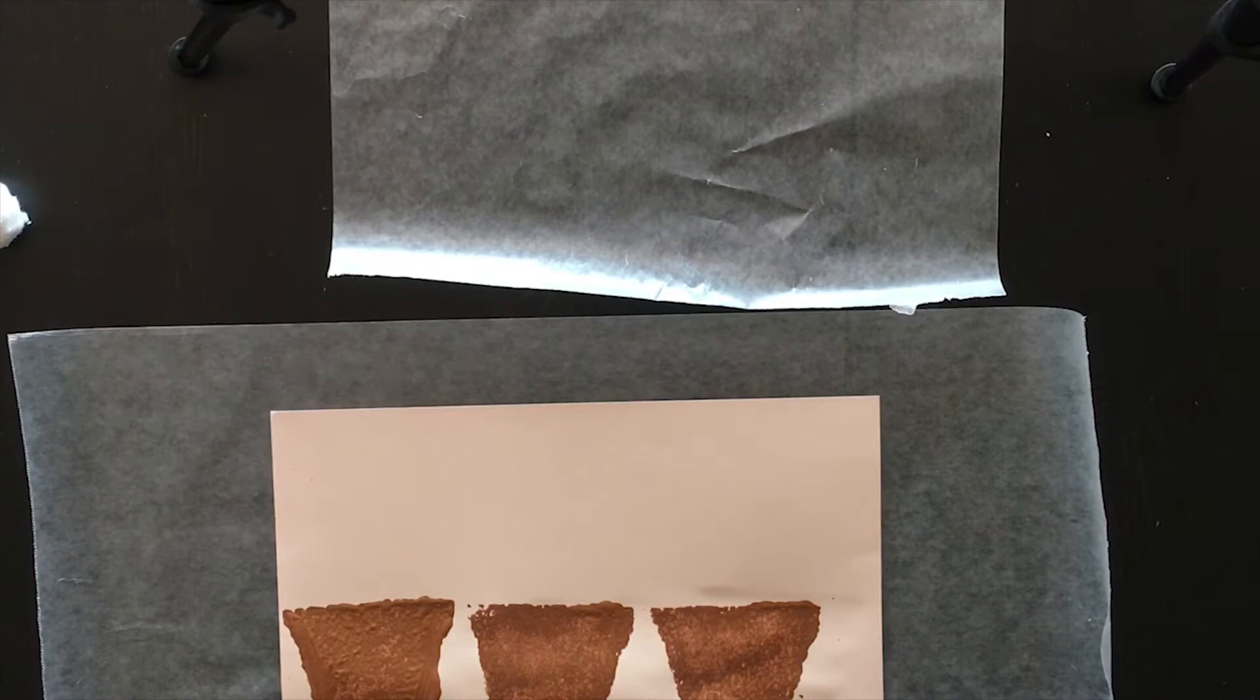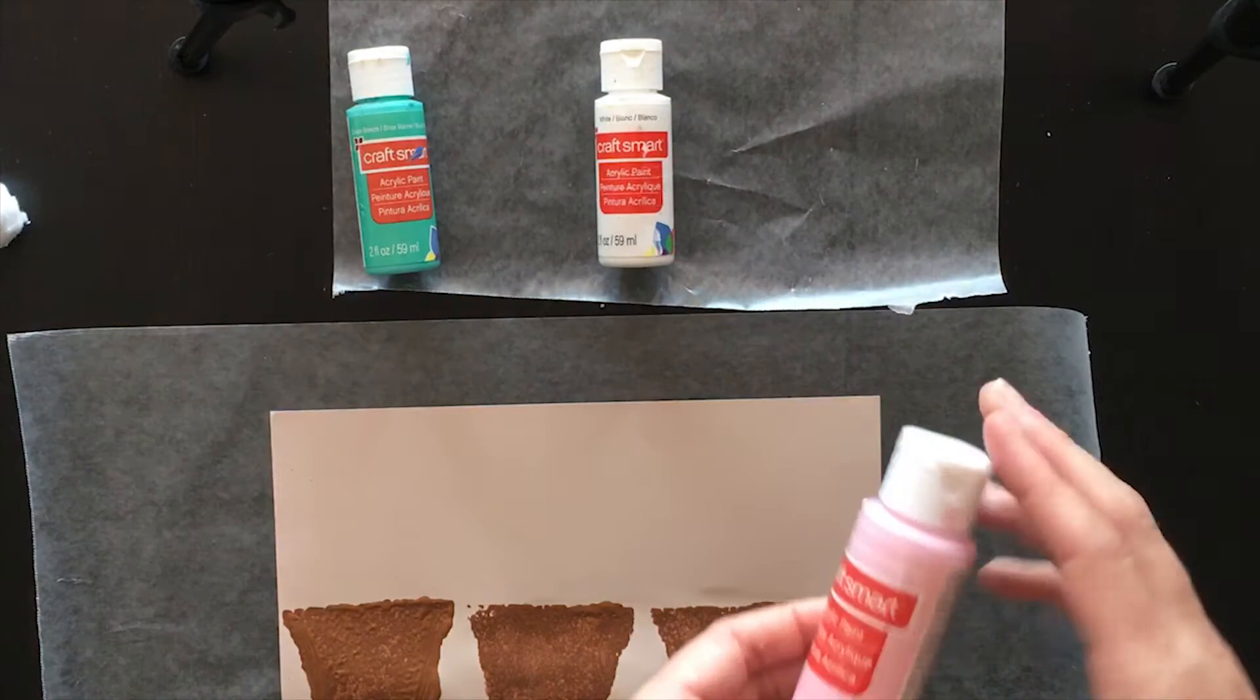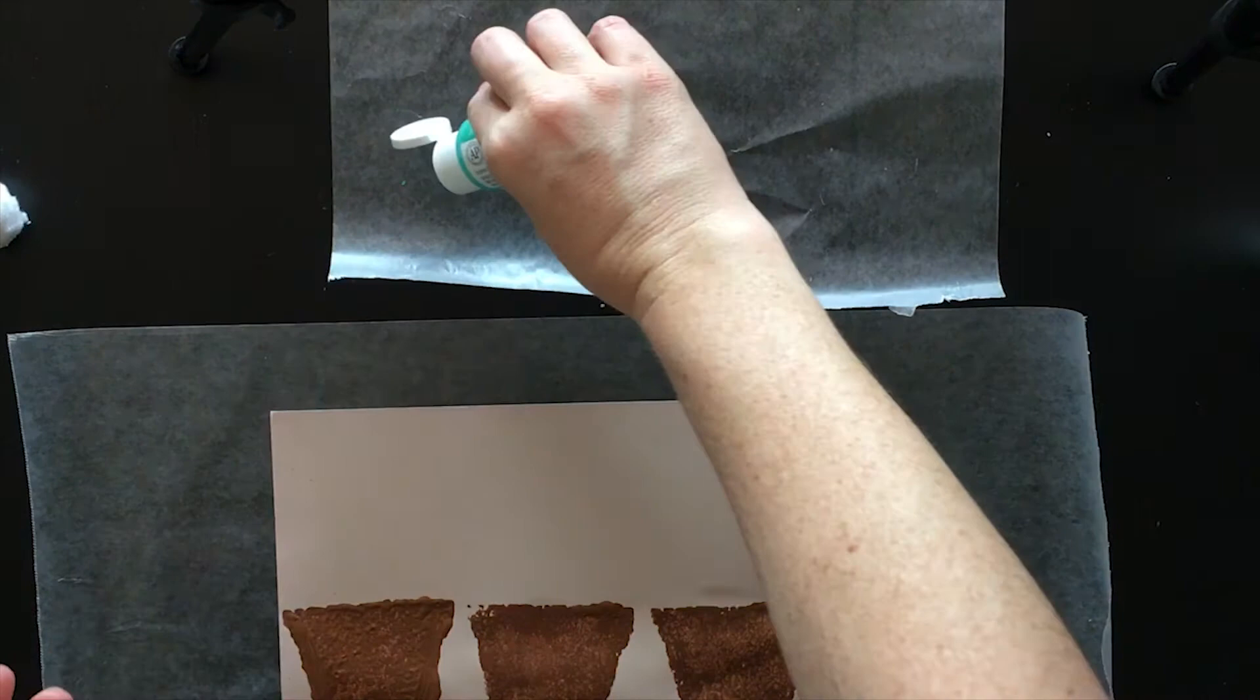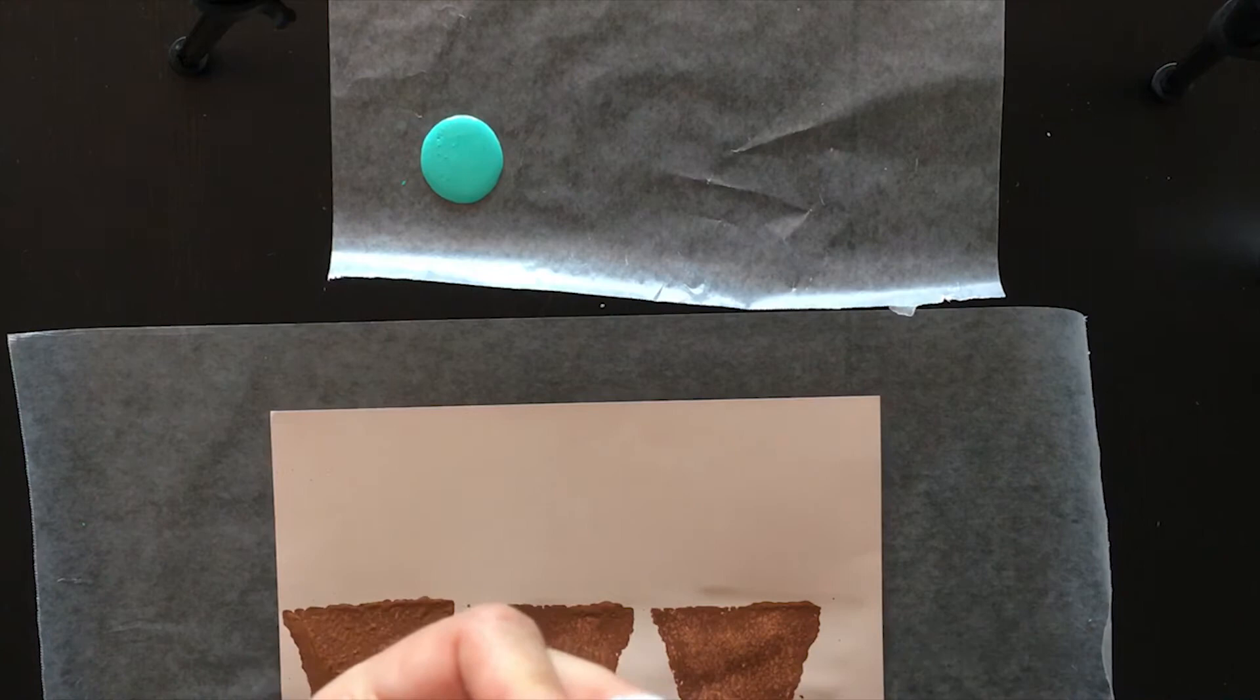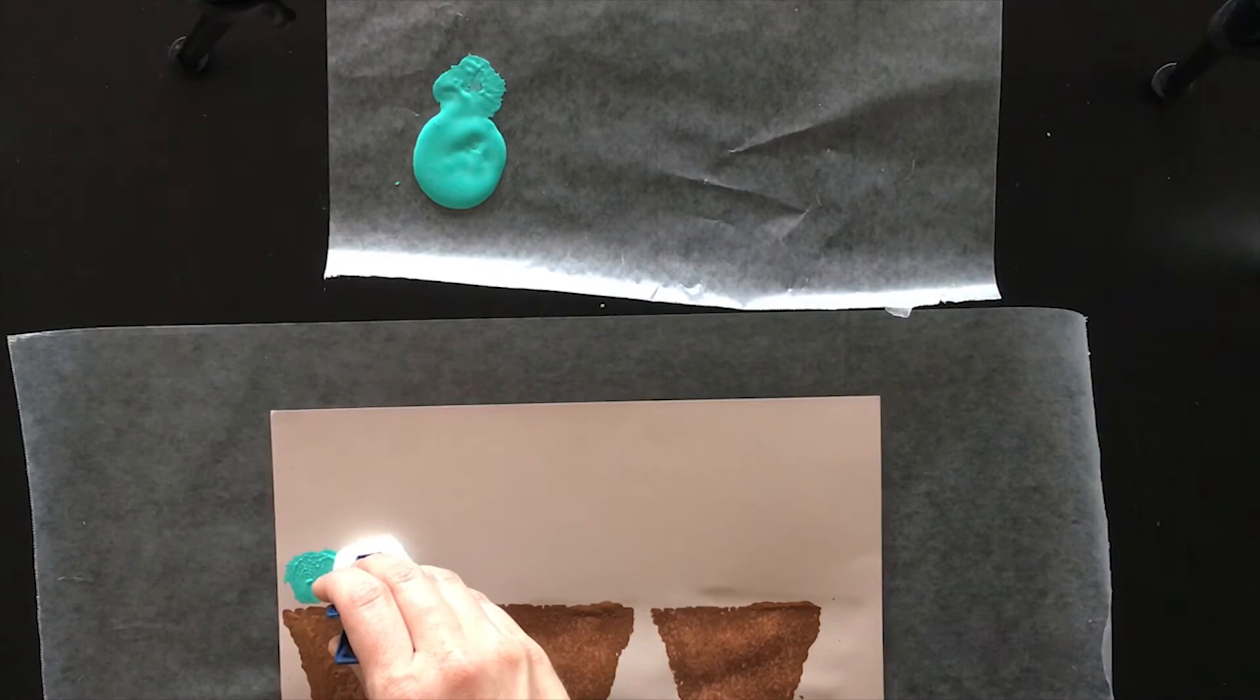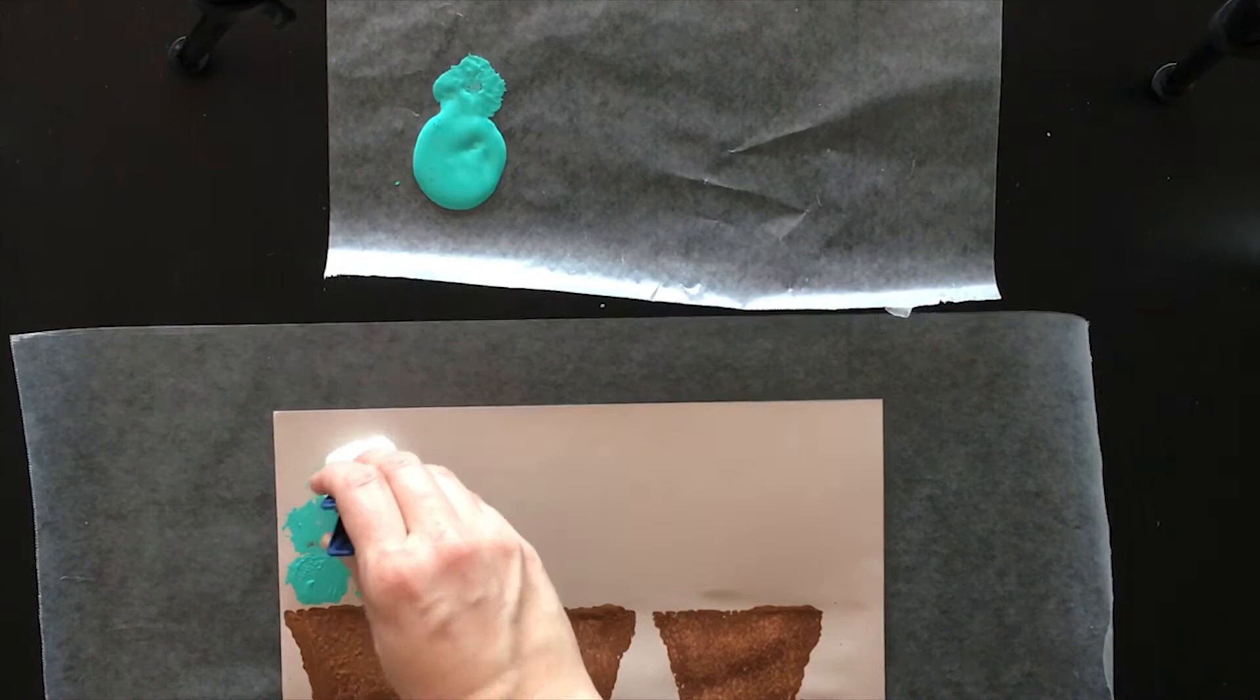Once your ice cream cones are dry or almost dry, you're going to decide which colors you want to represent the flavors that you like. So we chose this green for mint chocolate chip and we went with some white for vanilla and pink for strawberry. But whatever flavors and colors you want to use is fine. What you'll do is squirt some paint out and then using your clothes pin and your cotton ball, you don't have to use the clothes pin, but it is kind of a nice grippy to use for little hands. So you're going to dip your cotton ball in the paint and then you're just going to make little scoops of ice cream.